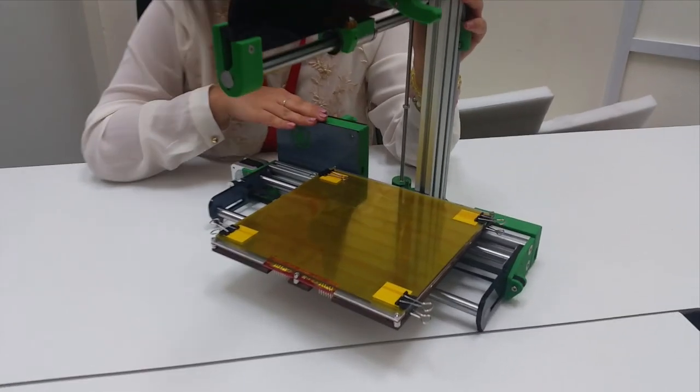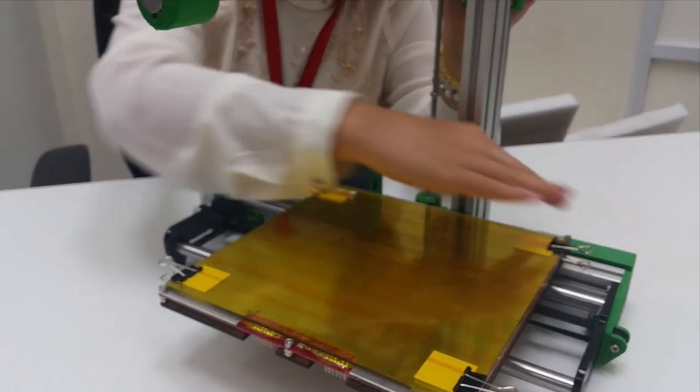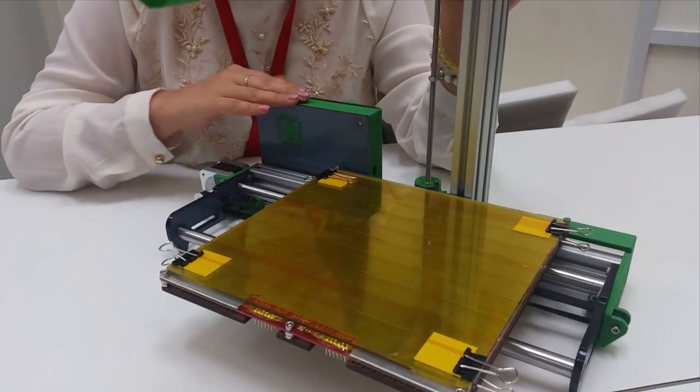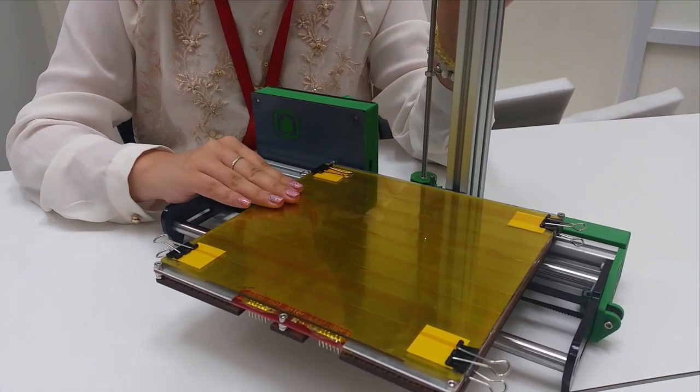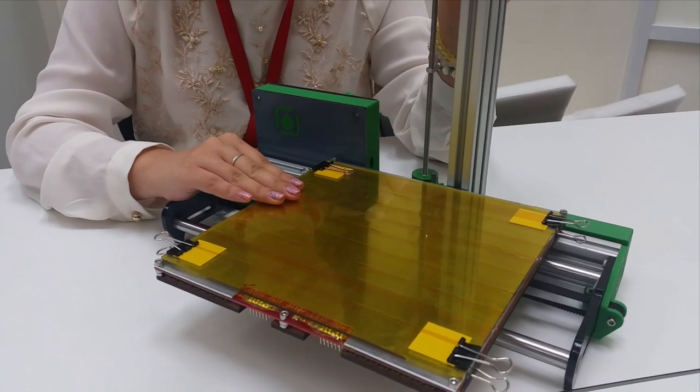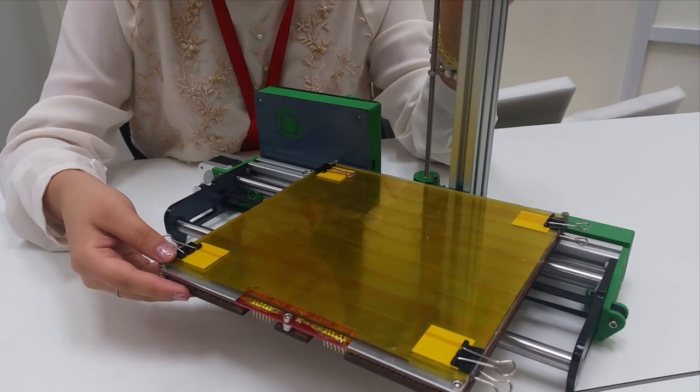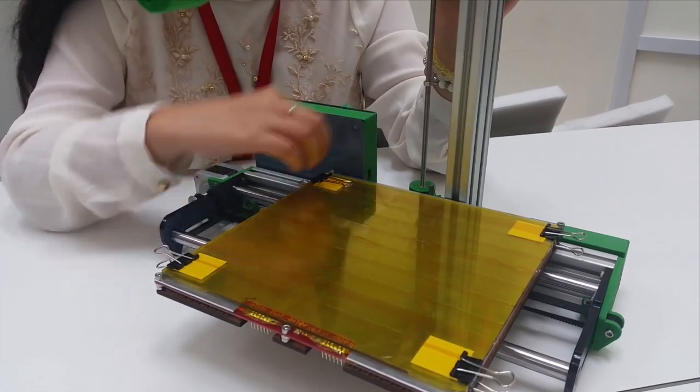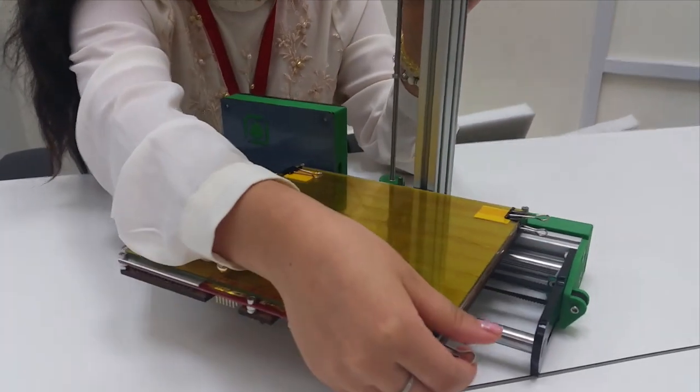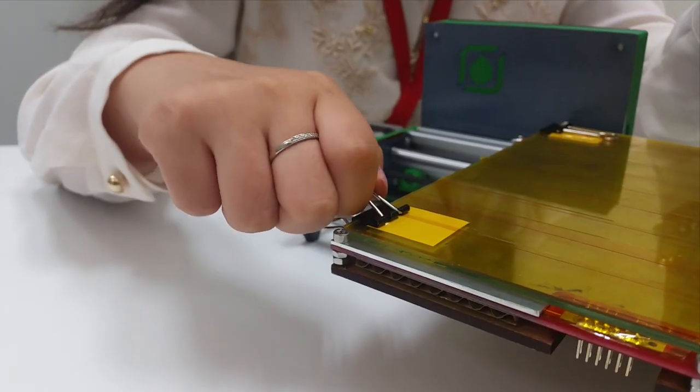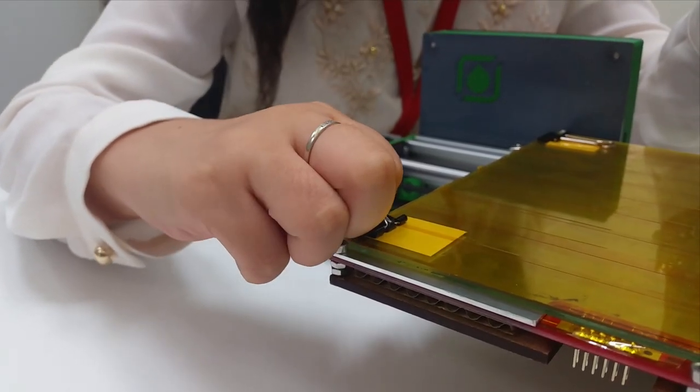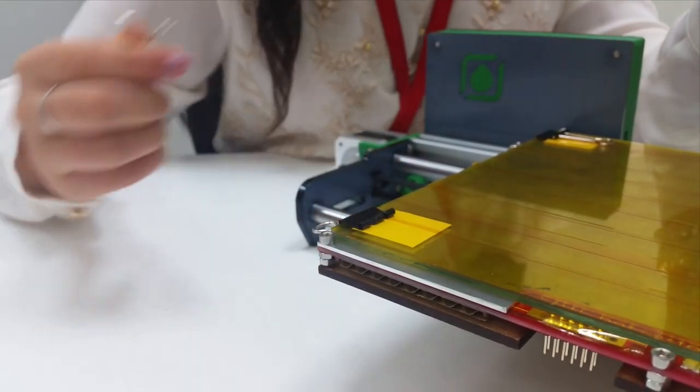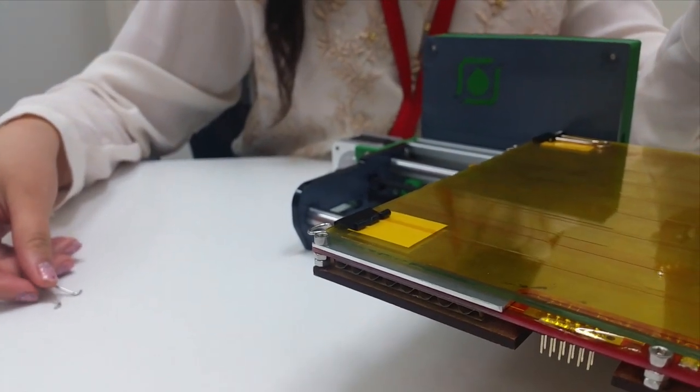After you have installed the electronics enclosure, the next step is to put on this heated bed. You can use paper clips to make it stay in position. You can remove these later so they won't disturb the printing process.